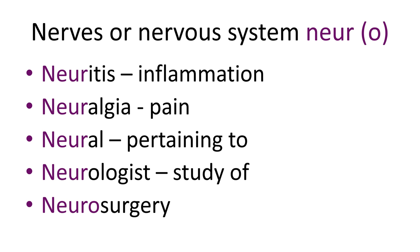A neurologist is someone who studies the nervous system. Technically neurology means anything to do with the study of the nervous system, but usually a neurologist is a doctor who specializes in disease of the nervous system. Then we have neurosurgery, carried out by neurosurgeons, which is any surgical procedure related to the nervous system. So the prefix neuro means nerves or the whole nervous system.